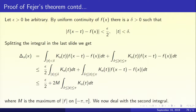Remember k_n is a positive kernel. So the integral over mod t less than or equal to delta will be less than or equal to the integral of k_n(t) dt over mod t less than or equal to pi. But that integral of k_n(t) is 1 — we saw that. So the first piece is simply less than epsilon by 2.